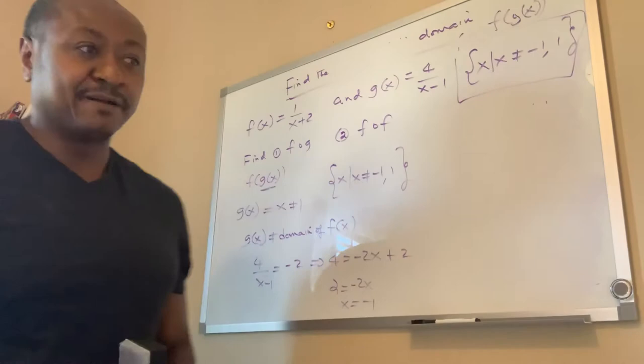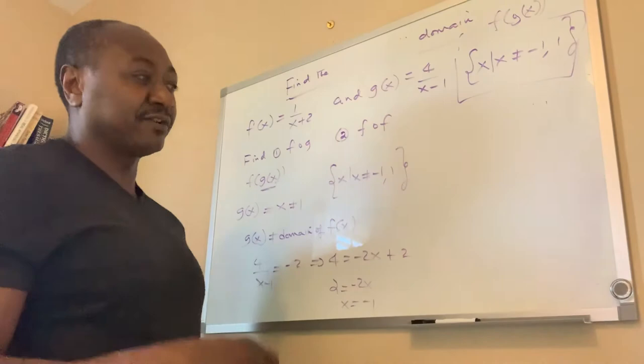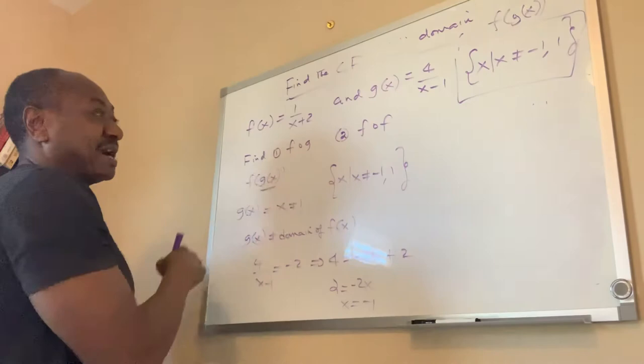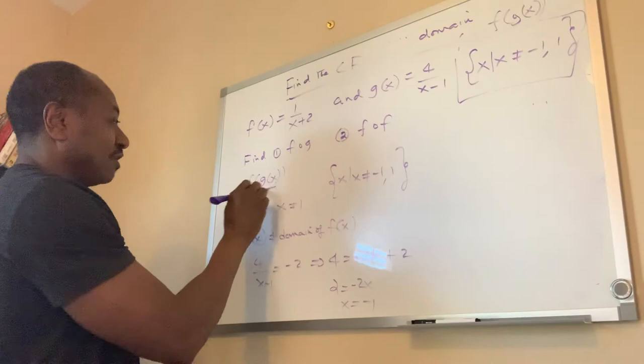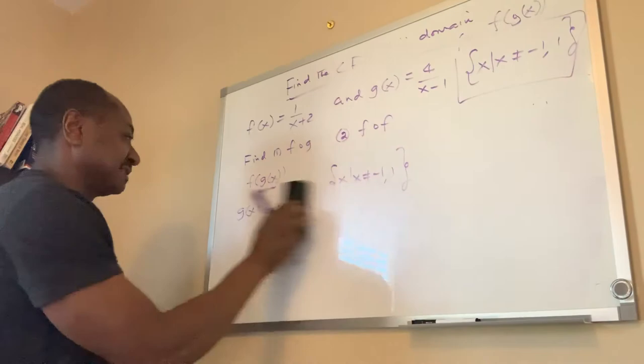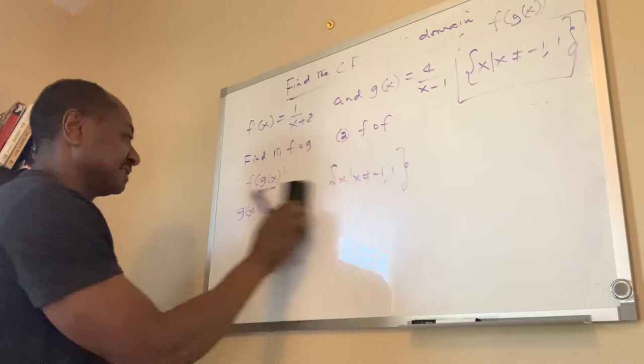That is how you find the domain of a composite function. Whether you find the composite function first or go straight to finding the domain, it is the same work and you arrive at the same domain. If the composite function was asked, you find it first, and that second restricted value is what you exclude from the domain.